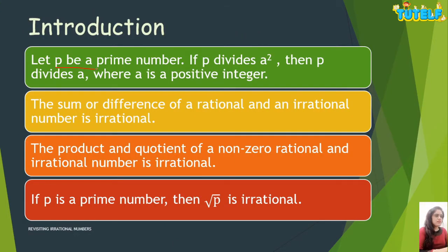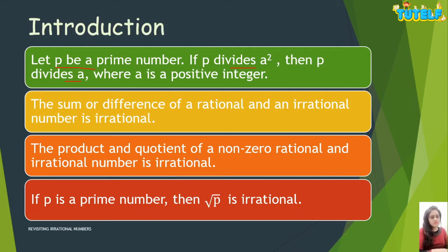If P is a prime number and P divides A squared, then P divides A also, where A is a positive integer. If you add or subtract one rational and one irrational number, the answer turns out to be irrational. And if you multiply or divide one rational and one irrational number, the answer turns out to be irrational. Also, if P is a prime number then root P is irrational.